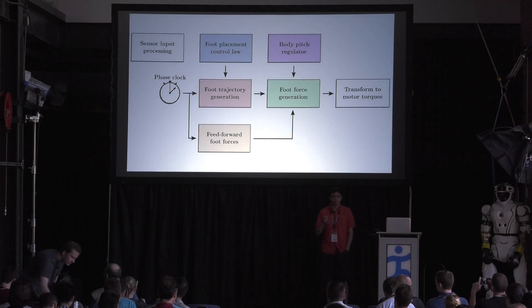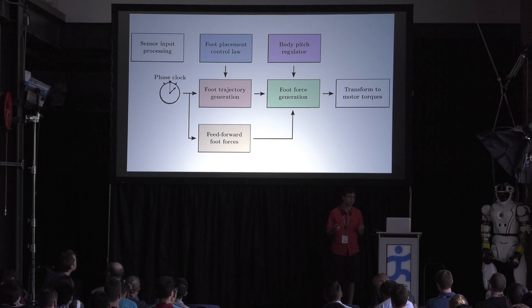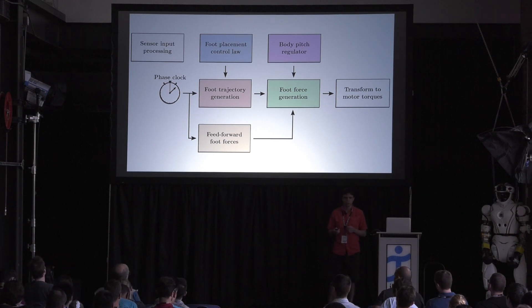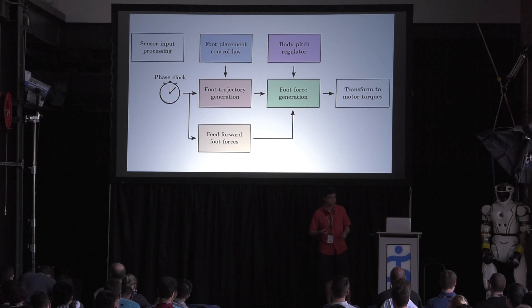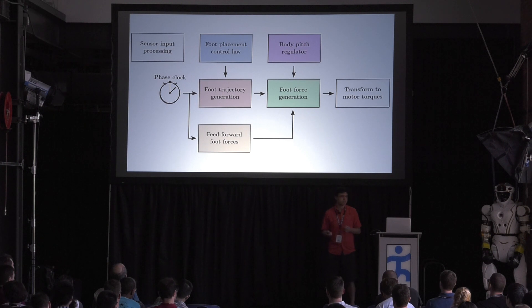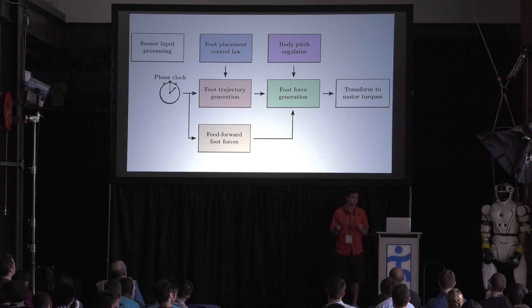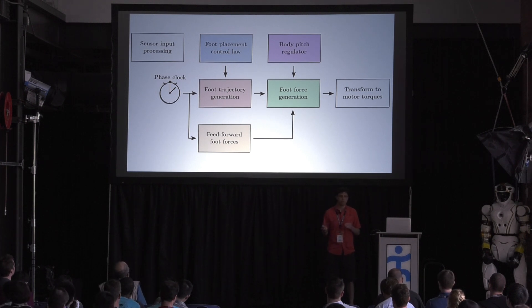The final thing we're trying with this approach is to structure the policy similarly to the heuristic policies that we've run before on Atrias and Cassie. As Jonathan Hurst stated in his talk on Tuesday, we believe that there is a set of fundamental truths inherent to the dynamical phenomenon of legged locomotion. By encoding our best understanding of these truths into the structure of the policy, we expect to strongly bias the space of possible policies towards solutions that are effective at generating locomotion behaviors without overfitting to the vagaries of some particular simulator.